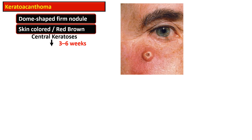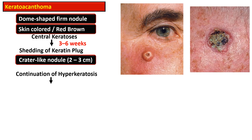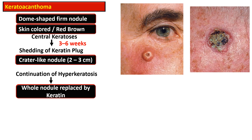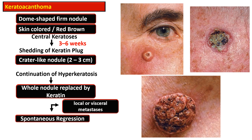The crater-like nodule forms due to central shedding of the keratinization. This reaches about two to three centimeters in size. There is continuation of the hyperkeratosis, and almost the whole lesion is replaced by keratin, which is subsequently shed.